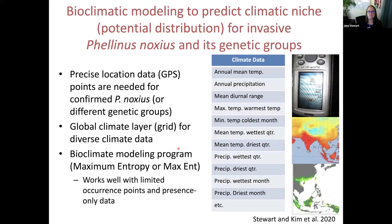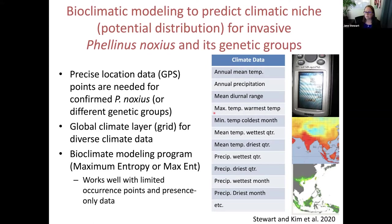We then looked at the potential climate space for the different genetic lineages we identified. We used GPS information from each location and downloaded climate data — 19 different climate variables including annual mean temperature, precipitation, and maximum warmest month — to determine if there is suitable climate space for each lineage. We used bioclimatic modeling with maximum entropy, or MaxEnt, which works well for limited occurrence points and presence-only data, to predict where these pathogens would be suitable and identify where risk is going to occur.